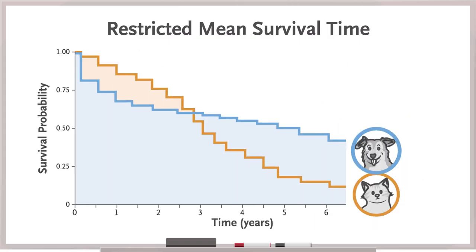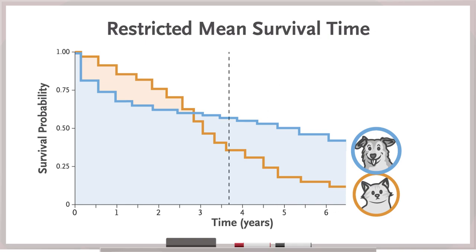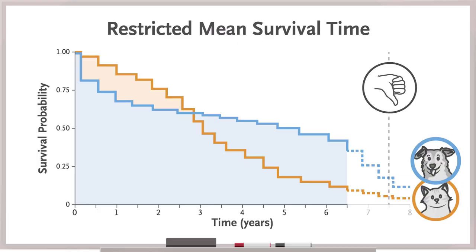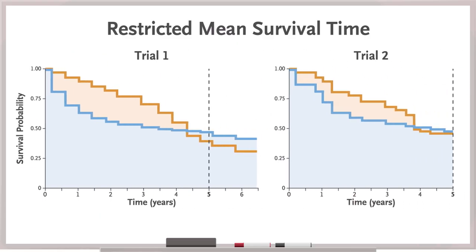Second, it is important to remember that the pre-specified end time is the critical component of restricted mean survival time. The restricted mean survival time will change if the end time changes. For that reason, the restricted mean survival time cannot be extrapolated beyond the observable data, and you should avoid comparisons of restricted mean survival times from different trials. The measure is specific to the design and characteristics of the data from which it was calculated.